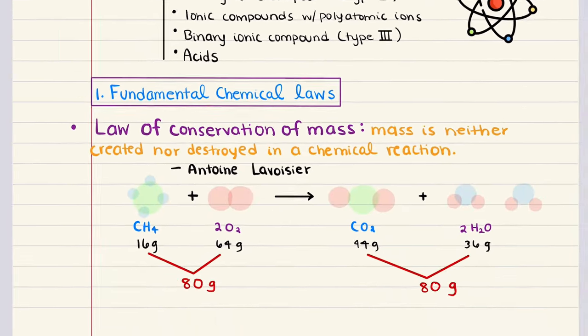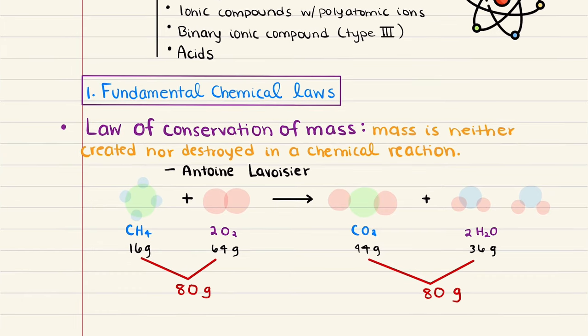Before we dive into Objective 1, I want to set the stage for this chapter. Chemistry has been important since ancient times. The Greeks were the first to try to explain why chemical changes occur, and by about 400 BC, they had proposed that all matter was composed of four fundamental substances: fire, earth, water, and air. The Greeks considered questions that really lay the basis for chemistry.